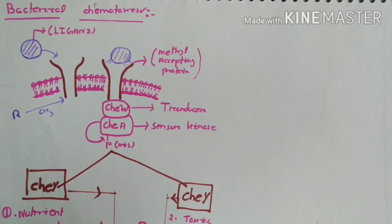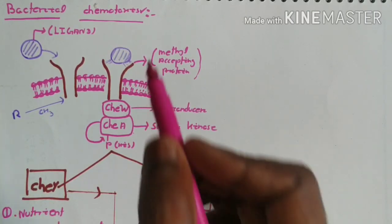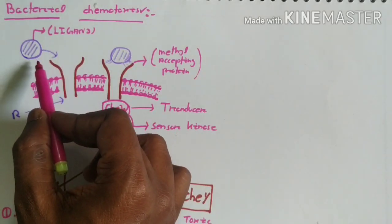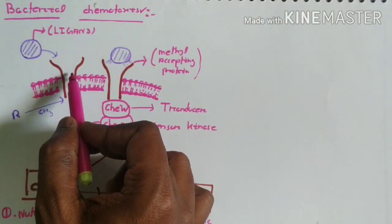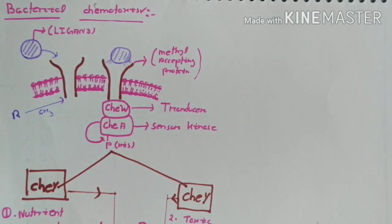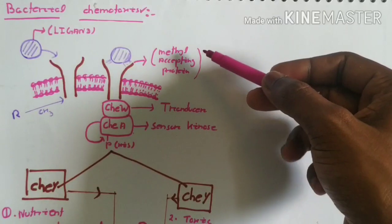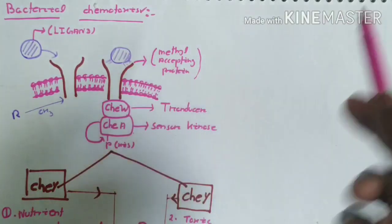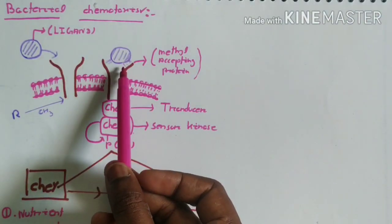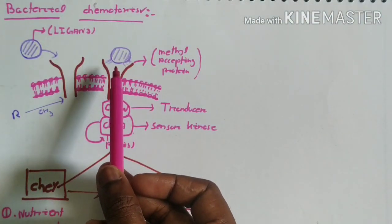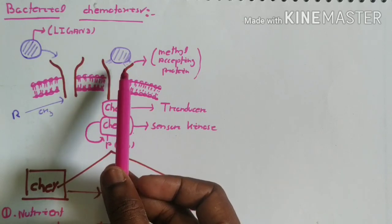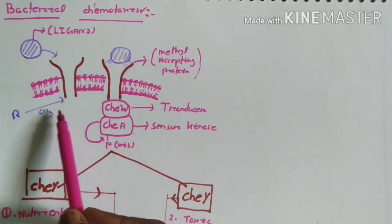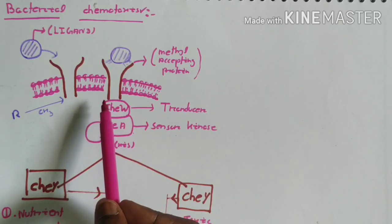So let's see the mechanism of chemotaxis. The ligand first binds to an MCP receptor. The ligand may be an attractant or repellent. The MCP receptor is a methyl-accepting protein receptor. When the ligand binds to the receptor, the receptor changes its conformation so that the methyl group is accepted by the receptor.